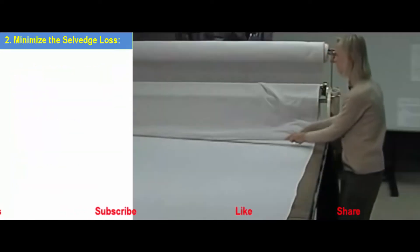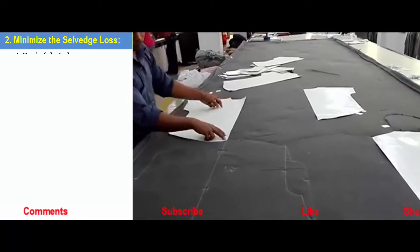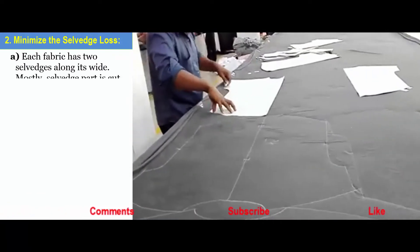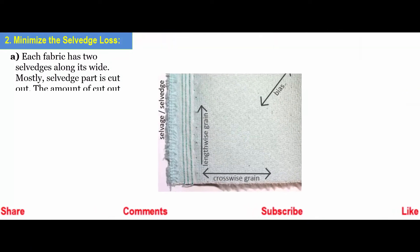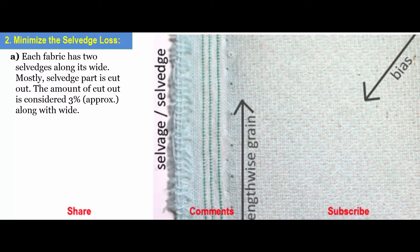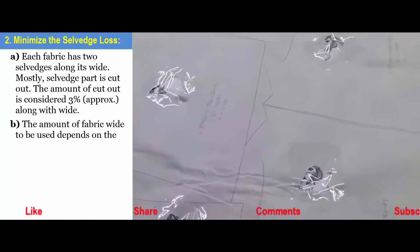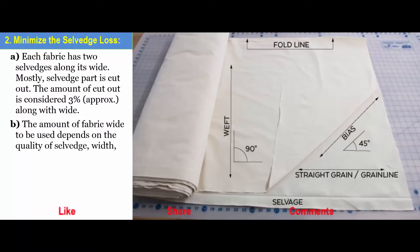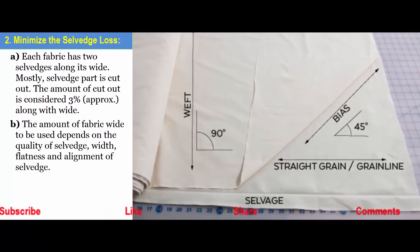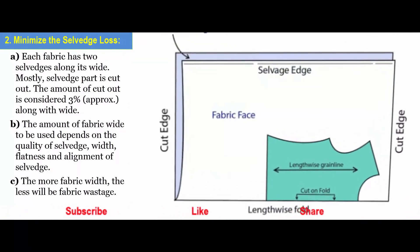Step 2: Minimize the Selvedge Loss. Each fabric has 2 selvedges along its width. The selvedge part is cut out, and the amount cut out is considered to be 3% along its width. The amount of fabric width to be used depends on the quality of selvedge width, flatness, and alignment of the selvedge.